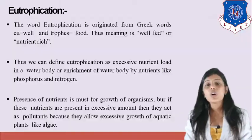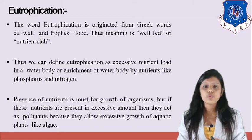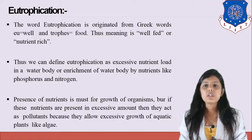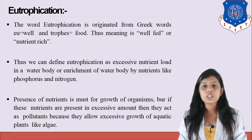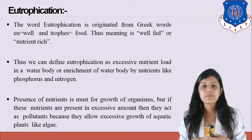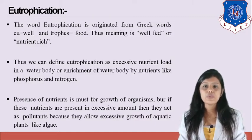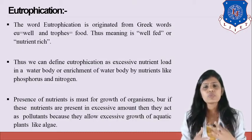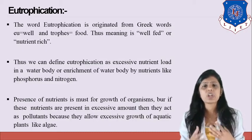Let us start from where we left off in chapter number two, water pollution. Today we are going to learn about eutrophication. The word eutrophication is originated from the Greek word 'eu' meaning well and 'trophs' meaning food, thus meaning well-fed or nutrient-rich.